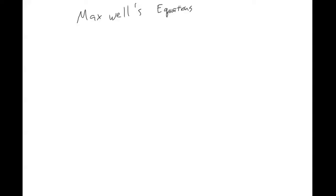Maxwell's equations are what govern all of electricity and magnetism. There are four of them and they look like this. There are different ways that you can write them, but they all have pretty similar structure.